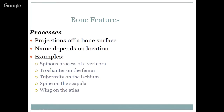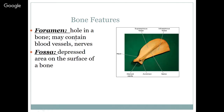Processes are any projections off a bone surface — named based on location. Examples include the spinous process of vertebrae, the trochanter process on the femur, the tuberosity on the ischium, the spine on the scapula, and the wing on the atlas. A foramen refers to a hole in a bone that may contain blood vessels and nerves. A fossa is a depressed area on the surface of the bone. Here on the scapula, we have the glenoid cavity where the head of the humerus fits. There's the spine of the scapula with the acromion at the tip, the supraspinous fossa above the spine of the scapula, the infraspinous fossa, and the neck of the scapula.